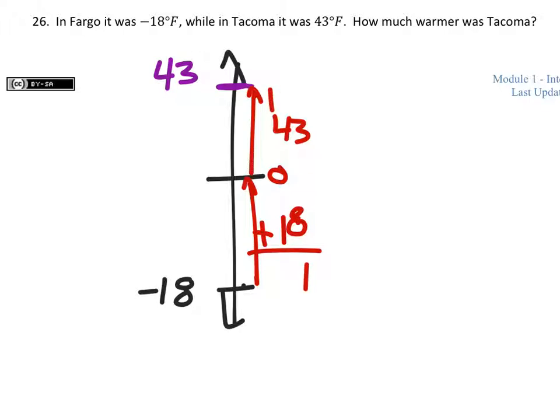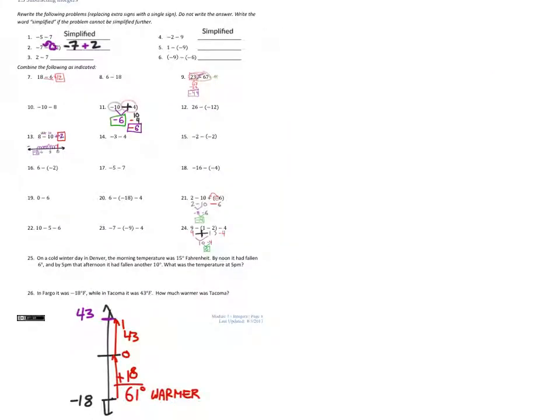So when we add these together, we get 3 plus 8 which is 11, carry the 1, 1 plus 4 plus 1 is 6. So how much warmer was it in Tacoma? 61 degrees warmer. Well, what if it asked how much colder was it in Fargo? We would say it would be 61 degrees colder, or negative 61 degrees warmer. See how that doesn't really work there though? So we'll just specify if it's warmer or colder.